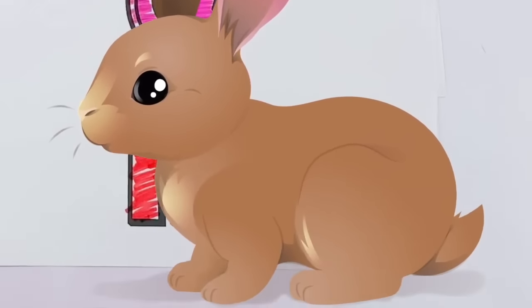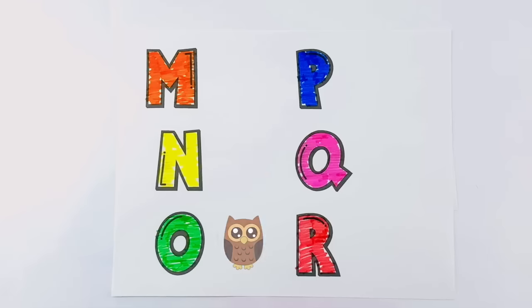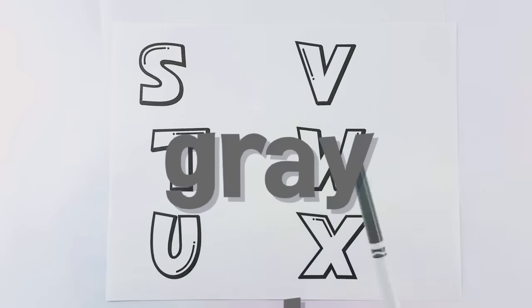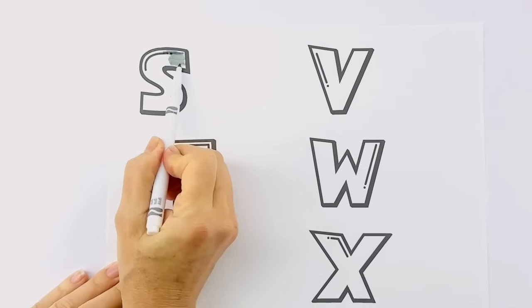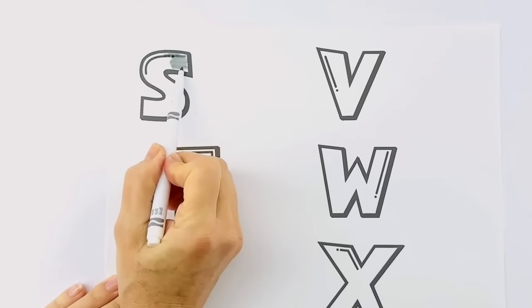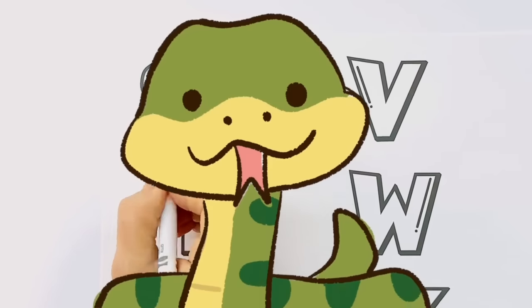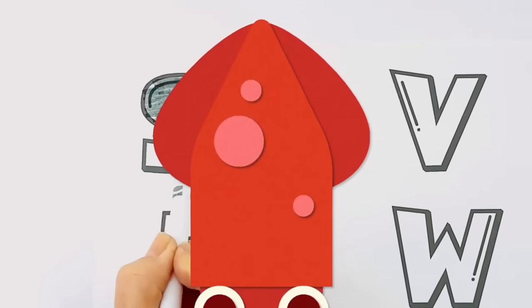Let's do this set again: M, N, O, P, Q, R. Great job! Gray is gris in Spanish. The letter S makes an 's' sound, like snake and squid.